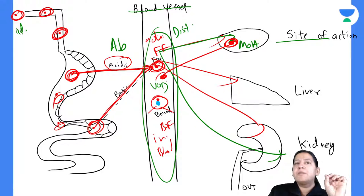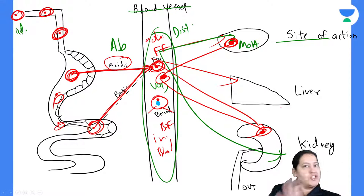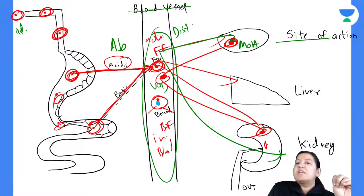Metabolism or biotransformation is the third chapter. Listen it like a story: absorption is done, distribution is done, now let me do metabolism in the liver, and finally it will go to the kidney for excretion.